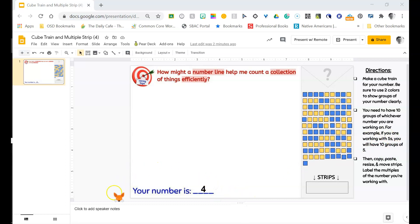Let's see, I can tell that the number I am working on is four because it tells me right here. So that means I'm going to make ten groups of four because that is the number I'm working on.